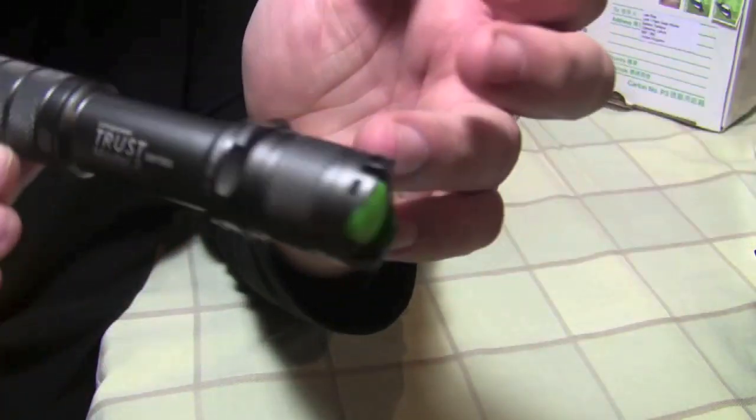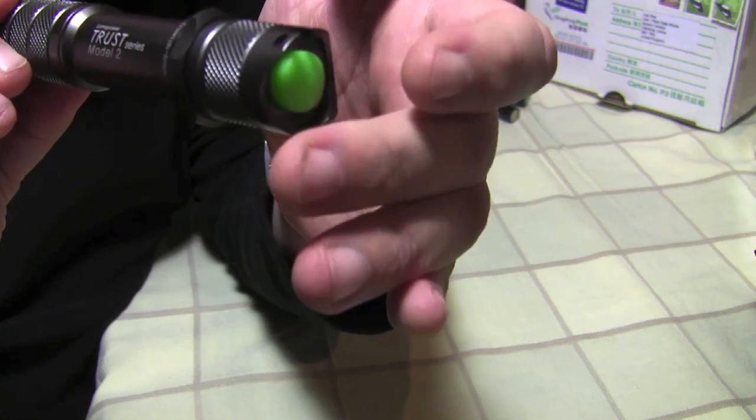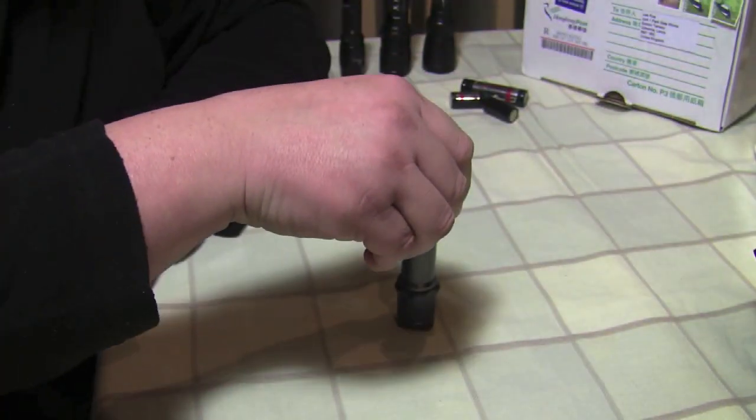Starting at this end, glow in the dark tail cap which is actually flat so it will candle stand.